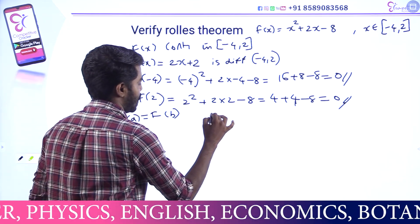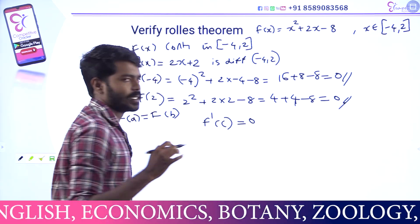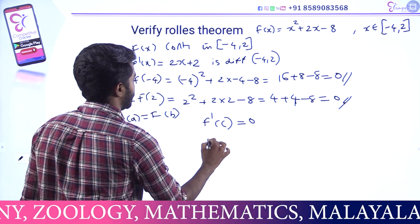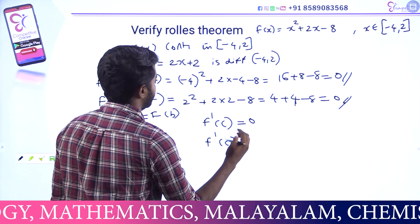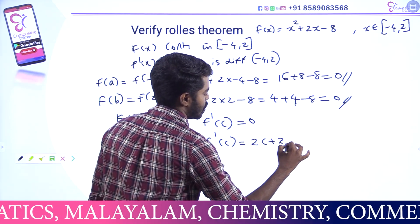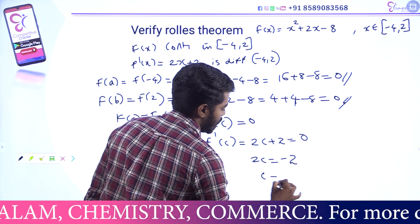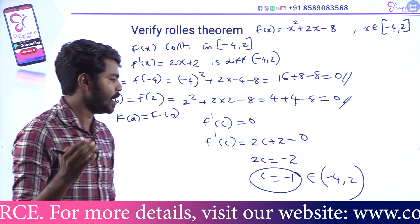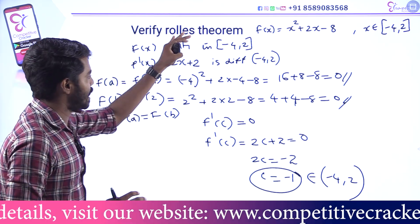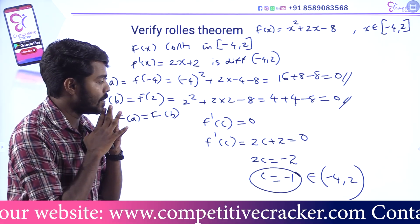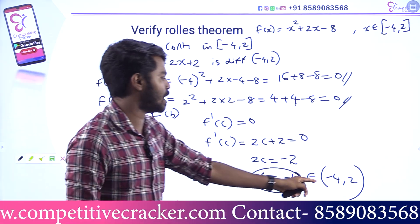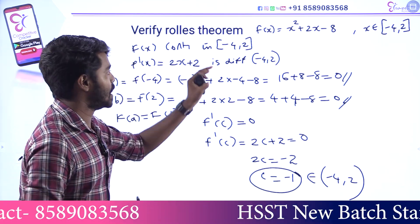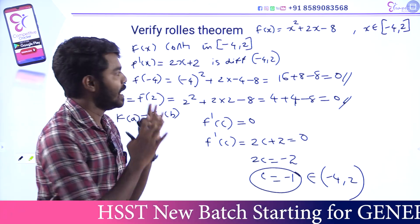Then we find F' of C equal to 0. Since F of A and F of B are both 0, we differentiate: F' of X is 2X plus 2. So F' of C: 2C plus 2 equal to 0, giving 2C equal to minus 2, therefore C equal to minus 1. C equals minus 1, which lies in the interval (-4, 2). That particular point is verified within the interval. The function is differentiable and continuous, and the point C is confirmed.